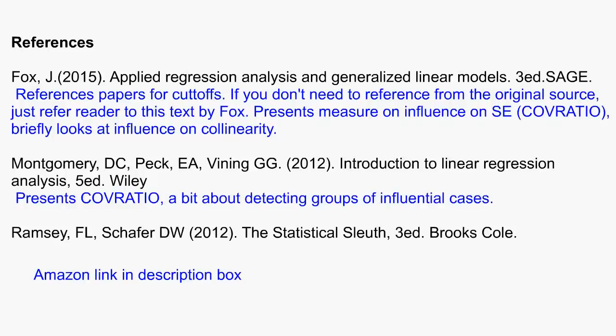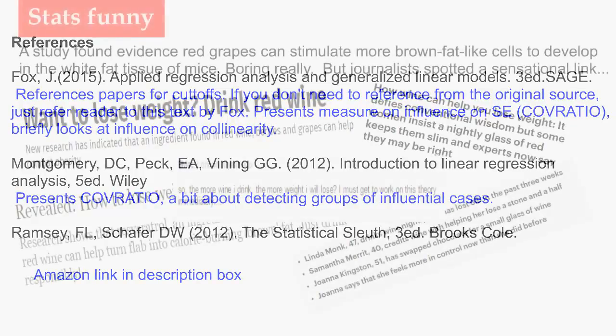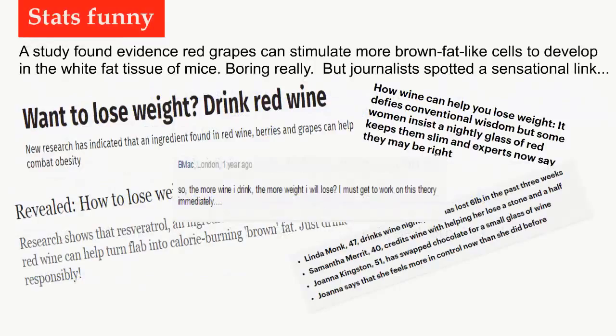4. We didn't talk about masking effects. Supposing we have two influential points that are close together, the individual influence measures may not pick up either point. Finally, when it comes to your project, hope that you don't have influential cases — or hope you do, so you can impress your professor with your knowledge of influence analysis. A related problem is the presence of outliers. Since an outlier may have low influence and so will not be picked up in influence plots, we need to check for those too — that's the topic of another video.